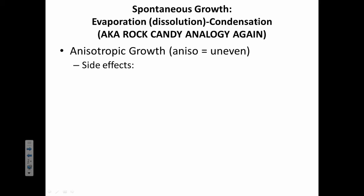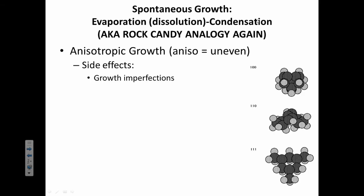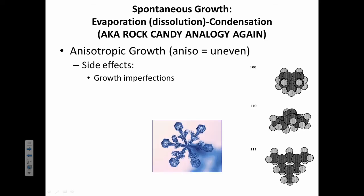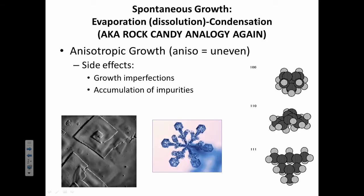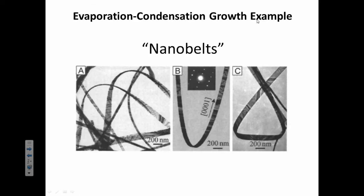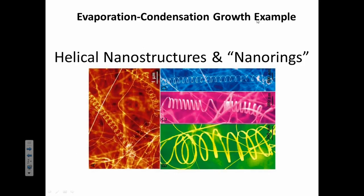You start with a supersaturated solution and you basically cause the particles to start nucleating. This method isn't that great. There can be a lot of imperfections and impurities. As you can imagine, things might not grow perfectly straight in this tube or wire formation. Here are some examples of things that have been grown this way: nanobelts, helical nanostructures, and nanorings.